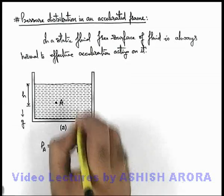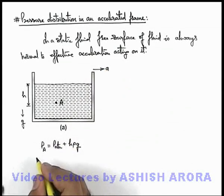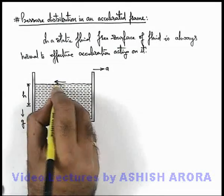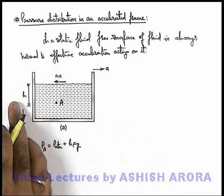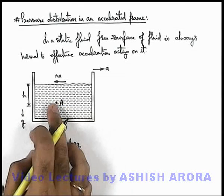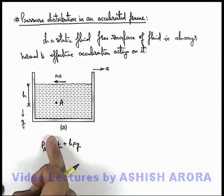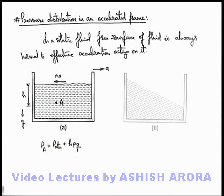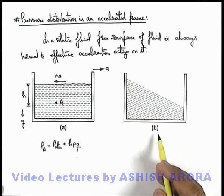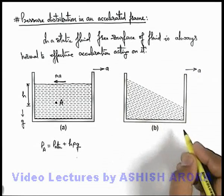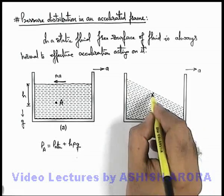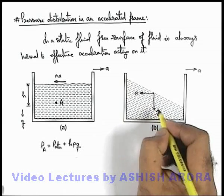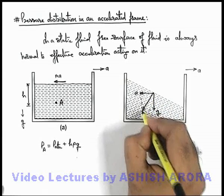Now let us consider a situation in which the container starts moving towards the right with an acceleration ay. The whole fluid body will experience a pseudo acceleration in the backward direction. The body will be experiencing an effective acceleration: ay in the backward direction and g in the downward direction. Due to this, the free surface of the liquid will no longer be horizontal, and the resulting situation is shown here in figure B.